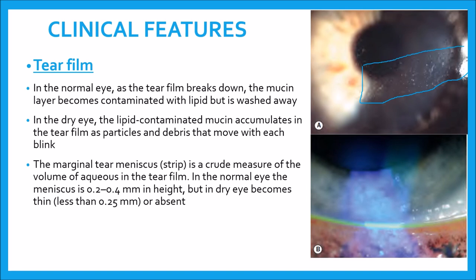The marginal tear meniscus or strip is a crude measure of the volume of aqueous in the tear film. In the normal eye the meniscus is 0.2 to 0.4 mm in height, but in dry eye it becomes thin — less than 0.25 mm — or can be absent as stained here with fluorescein.